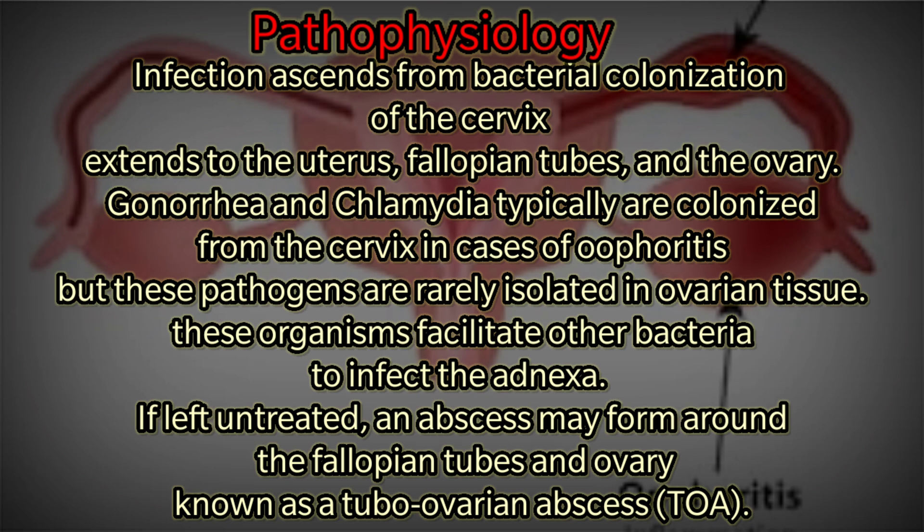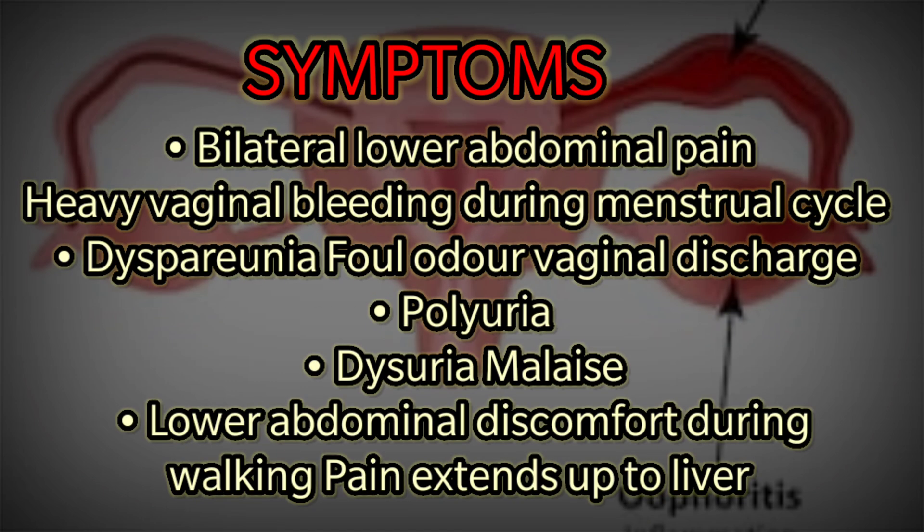Rather, these organisms facilitate other bacteria to infect the adnexa. If left untreated, an abscess may form around the fallopian tube and ovary, known as a tubo-ovarian abscess.